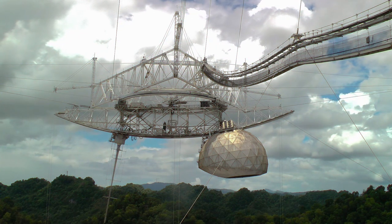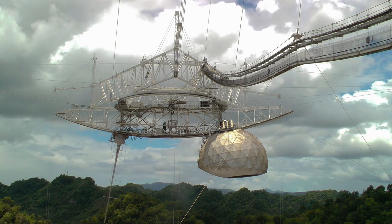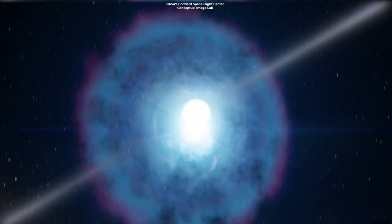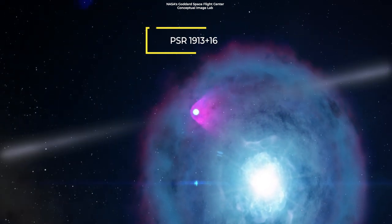Joseph Taylor and Russell Hulse found the first binary pulsar at Arecibo Observatory in 1974. The binary pulsar is known as PSR 1913 plus 16.